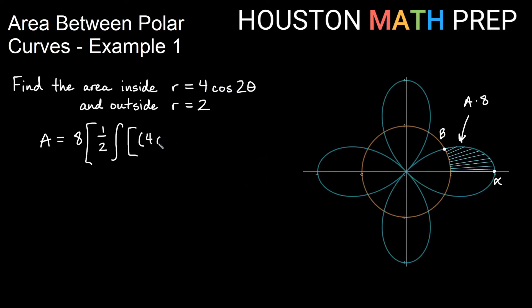So we'll want 4 cosine 2 theta squared, that's my outer function, minus my inner function which is the circle and that's r equals 2, so that would be 2 squared. So that is outer function squared minus inner function squared.